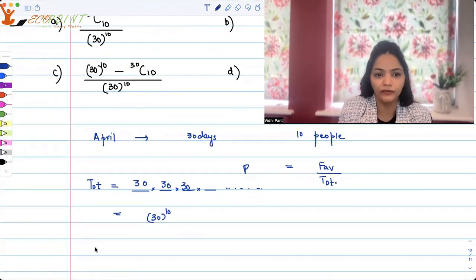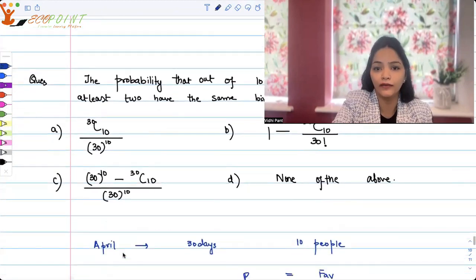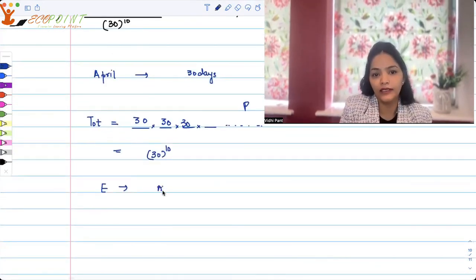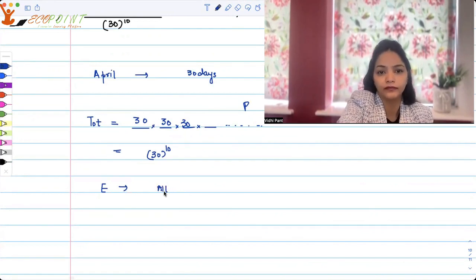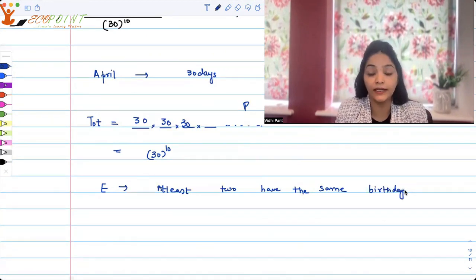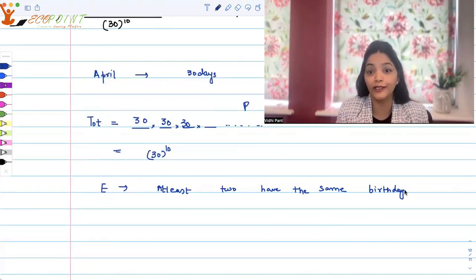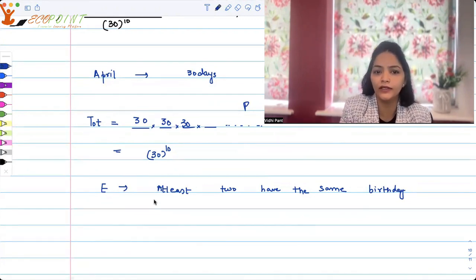Now if we are talking about E is the event that we're looking at, and the event is that at least two have the same birthday or they're sharing the birthday. Now if I start looking at cases, it's at least two. That means at least three could be there. So two people could be sharing, three people could be sharing, so on and so forth. So whenever you have at least, what is the best thing to work at?